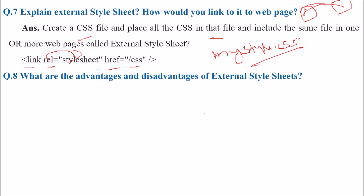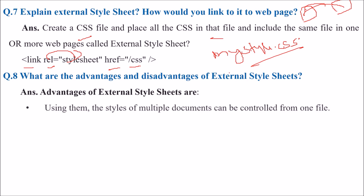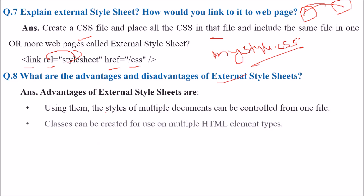What are the advantages and disadvantages of an external style sheet? For advantages: using an external style sheet, the styles of multiple pages and multiple documents can be controlled by just one file. Classes can be created for use with multiple HTML element types. In complex situations, selector and grouping methods can be used to apply styles. And if you need to update the CSS file in a live site, you just have to upload the CSS file — it is quite easy to manage.